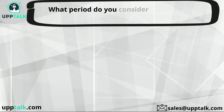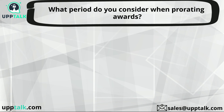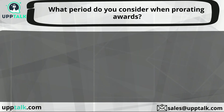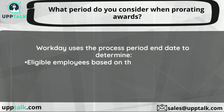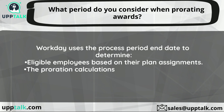What period do you consider when prorating awards? Workday uses the process period end date to determine eligible employees based on their plan assignments. The proration calculations and performance ratings are used in this determination.